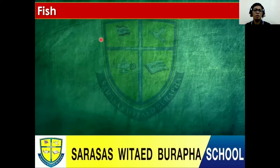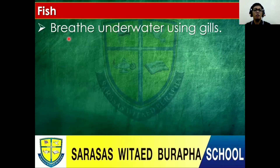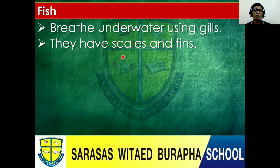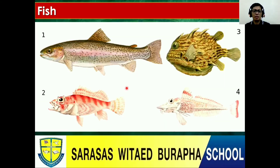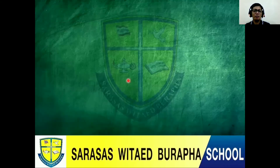Fish. What are the characteristics of fish? They can breathe underwater using gills. They have scales and fins. They lay eggs and they are cold-blooded. Let's see some examples — of course, we already know what fish are. Nemo is a fish, right? Let's go to the next one.